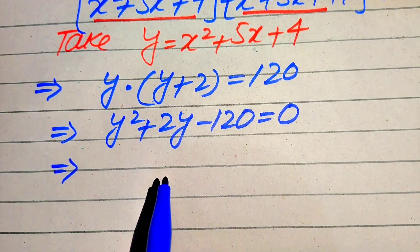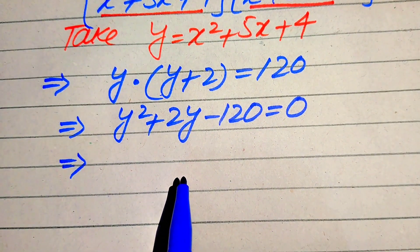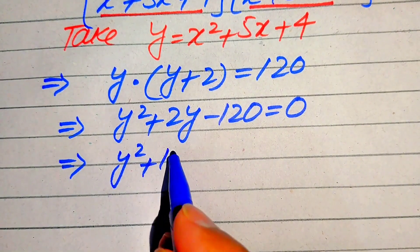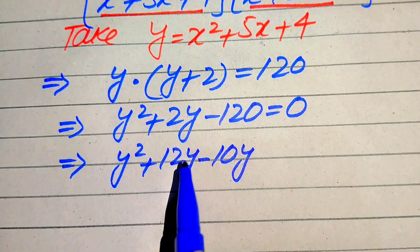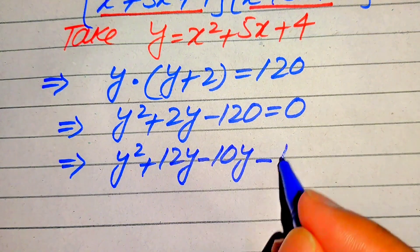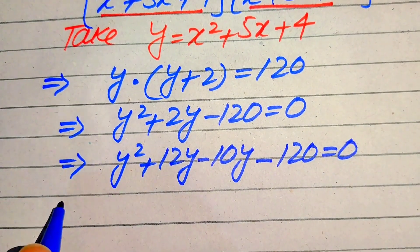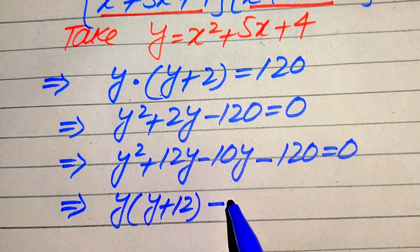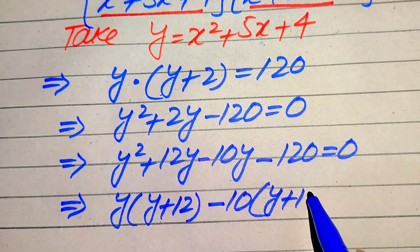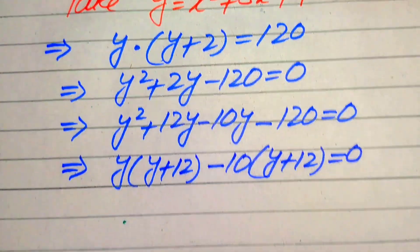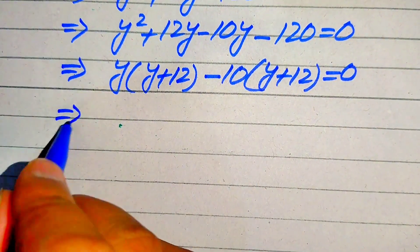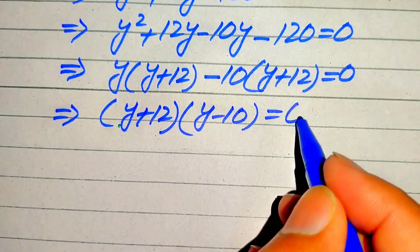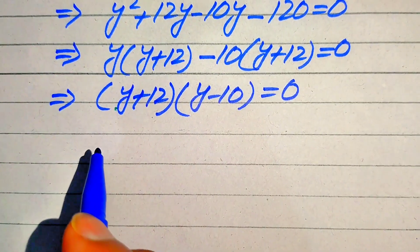We factor this equation by breaking the middle term: 2y is written as 12y − 10y, giving y² + 12y − 10y − 120 = 0. Taking y common from the first two terms gives y(y + 12), and taking −10 common gives −10(y + 12) = 0. Taking (y + 12) common from both, we get (y + 12)(y − 10) = 0.